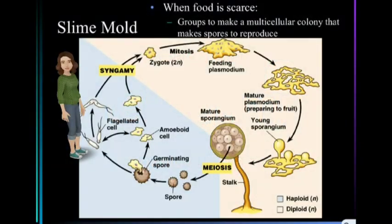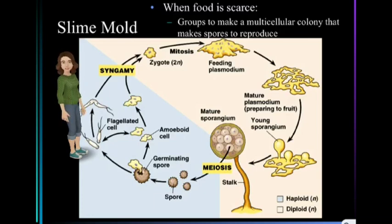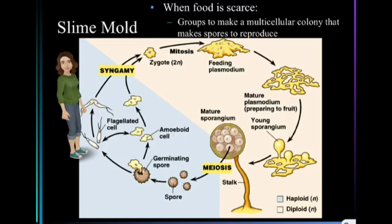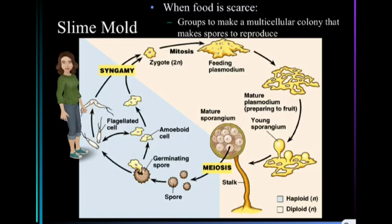The slime mold has a really cool life cycle. It starts as either a flagellated cell or an amoeboid cell. When those two come together, they go through mitosis and make this big, oozing, feeding plasmodium. When food that they're trying to absorb runs out, they will spread out and set up little stalks that have spores on the inside of them. Those spores then hopefully fly away into the wind and start a new plasmodium somewhere else.